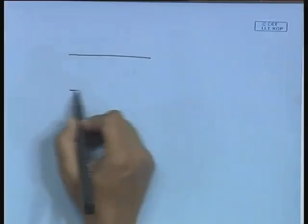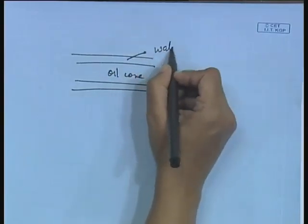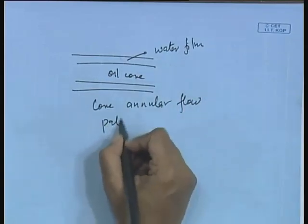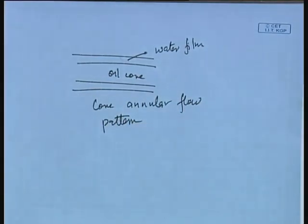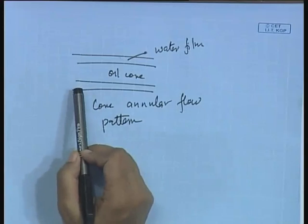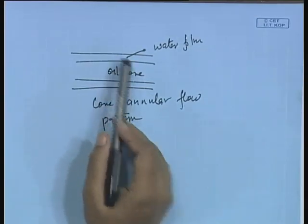We have observed something like the annular flow pattern for oil-water cases, called the core annular flow pattern. Just like the annular flow pattern, there is an oil core and a water film. If we inject a very small amount of water such that only water wets the pipe wall and prevents the oil core from contacting the pipe wall, then the frictional pressure gradient arises due to the contact of water with the wall.